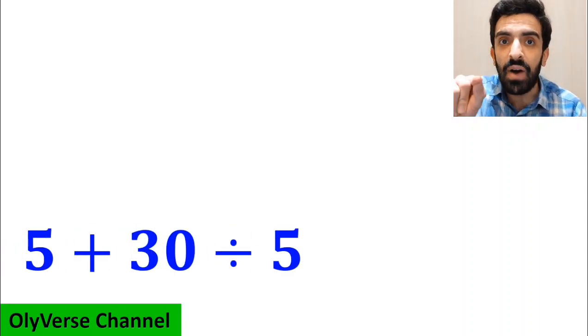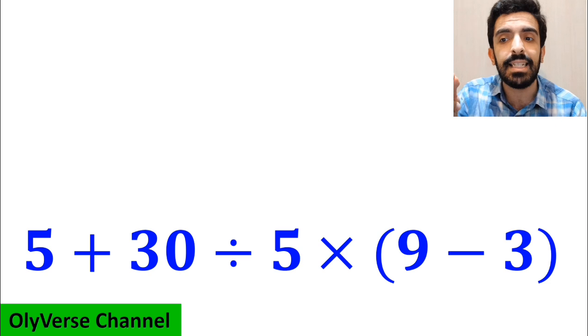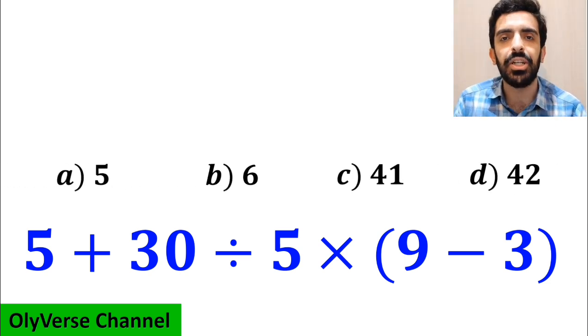What is the value of the expression 5 plus 30 divided by 5 times open parenthesis 9 minus 3 close parenthesis? Which option do you think is the correct answer to this question?